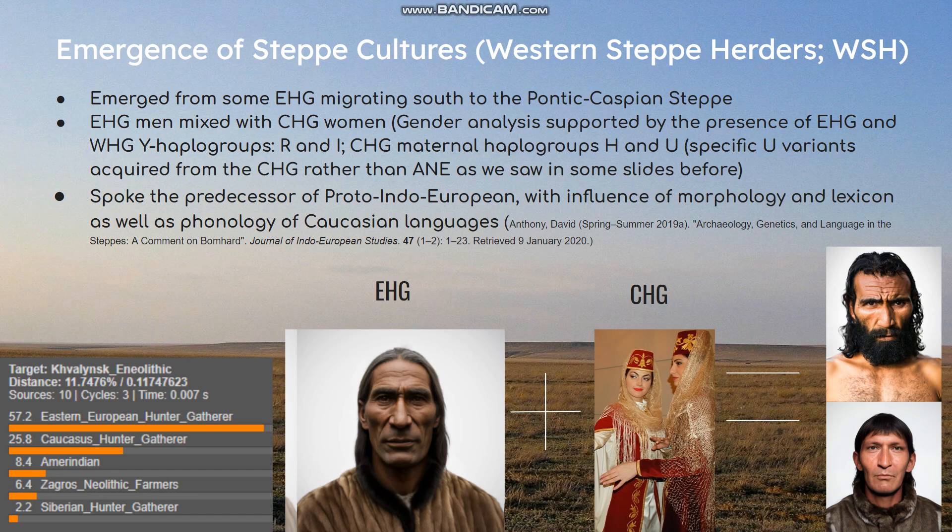Some of these Eastern hunter-gatherers migrated down to the Pontic-Caspian Steppe, which is Western Kazakhstan, Ukraine, a part of Southern Russia, and a very tiny bit of the Northeast Balkans. These EHG migrated down and mixed with Caucasus hunter-gatherer, or CHG women. We know it was EHG men who did this because of the presence of R and I Y-DNA haplogroups — Y-DNA is paternal while mtDNA is maternal. We see maternal haplogroups H and U, but the specific U variants acquired from the CHG were not from the Ancient North Eurasians, as we saw in some slides before.